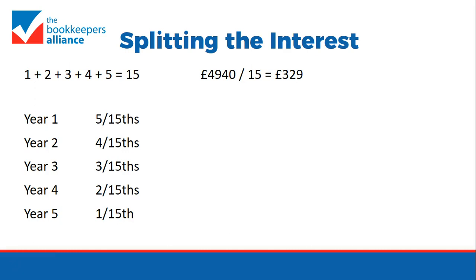It's then a simple calculation: five-fifteenths of £4,940, or five times £329. So £1,647 in the first year, £1,317 in the second year, and £988 in the third year — you can see how the interest drops with each year.